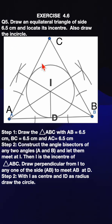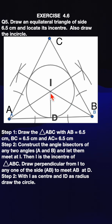With this measurement, first we have to draw the triangle. After that, we are going to draw the angle bisectors of any two angles. The point of intersection is the incenter. After the triangle, take the compass and put the pointer at vertex A, then draw two arcs.